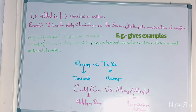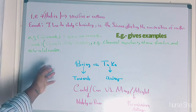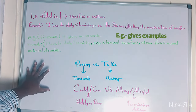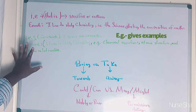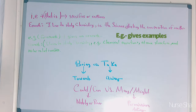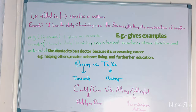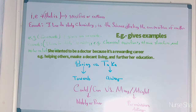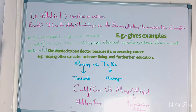Another example of e.g.: 'She wanted to be a doctor, e.g., I get to help people, I make a decent living, and I can further my education.' So you're giving examples of why she wanted to be a doctor — that's when you use e.g.